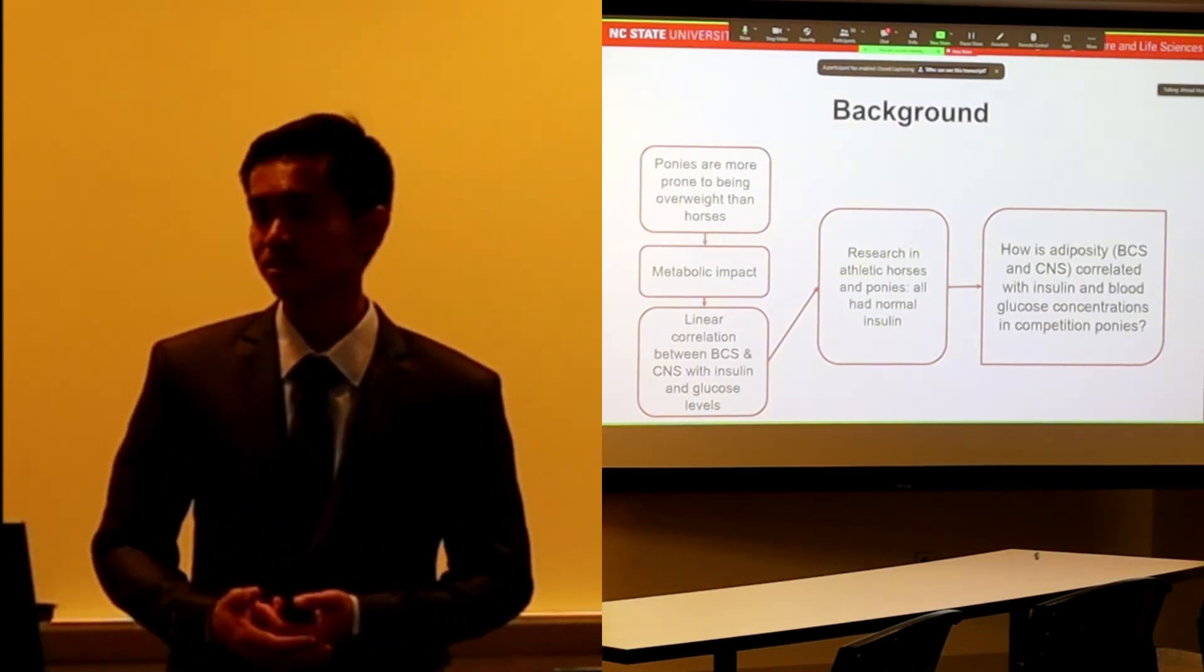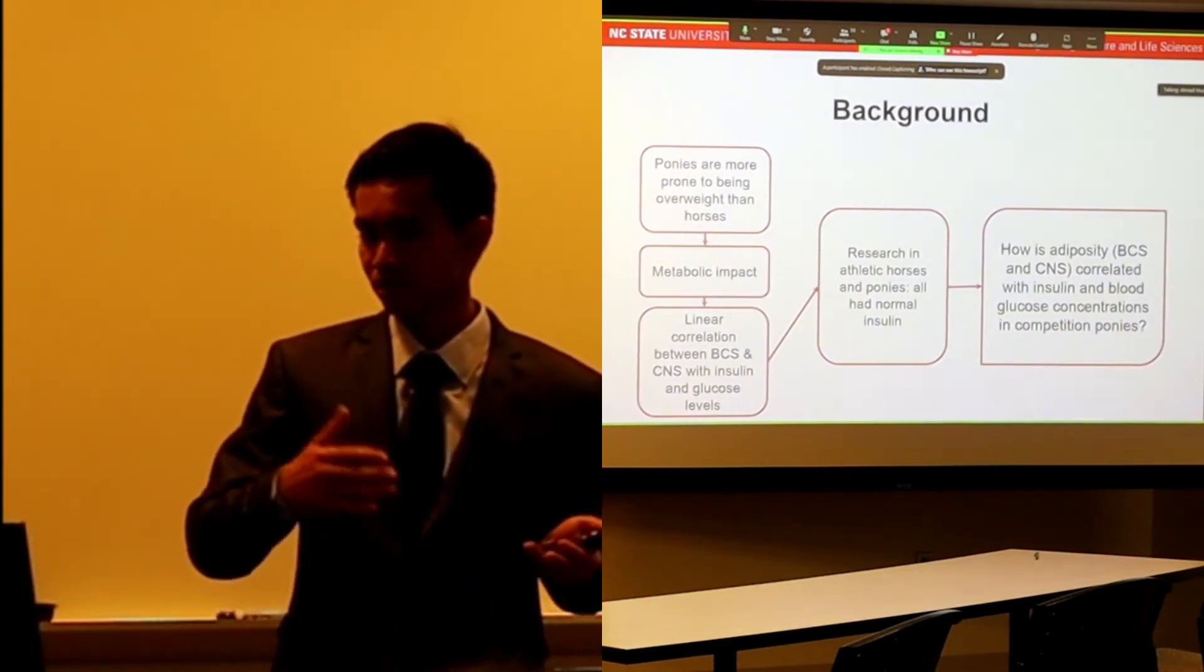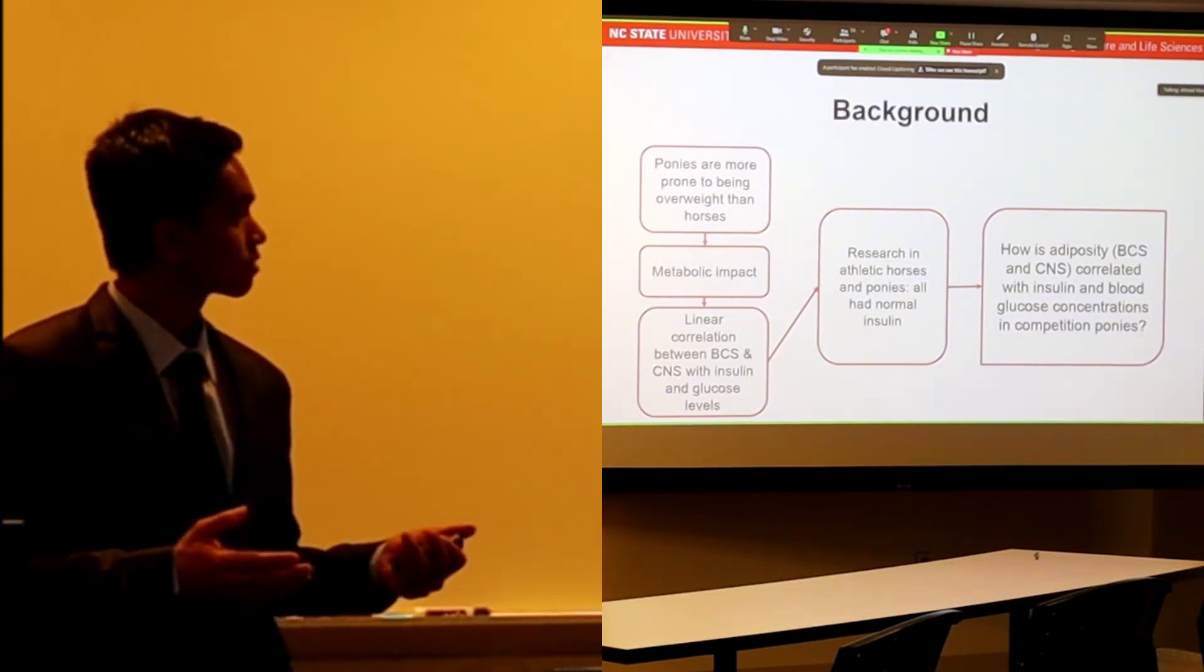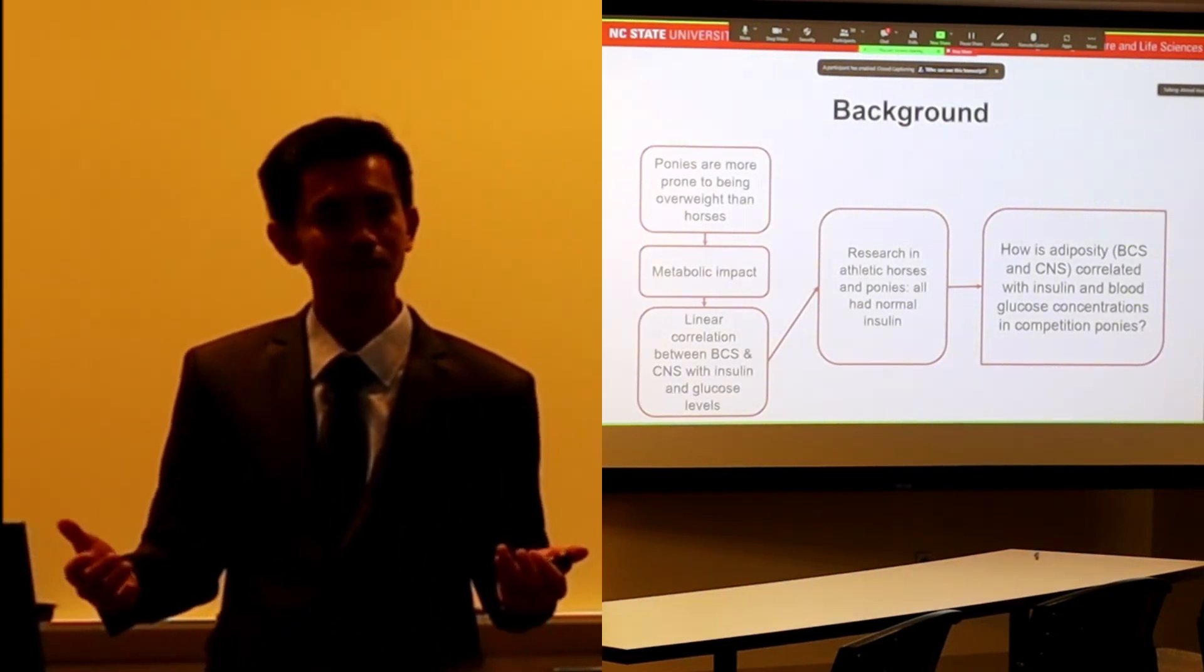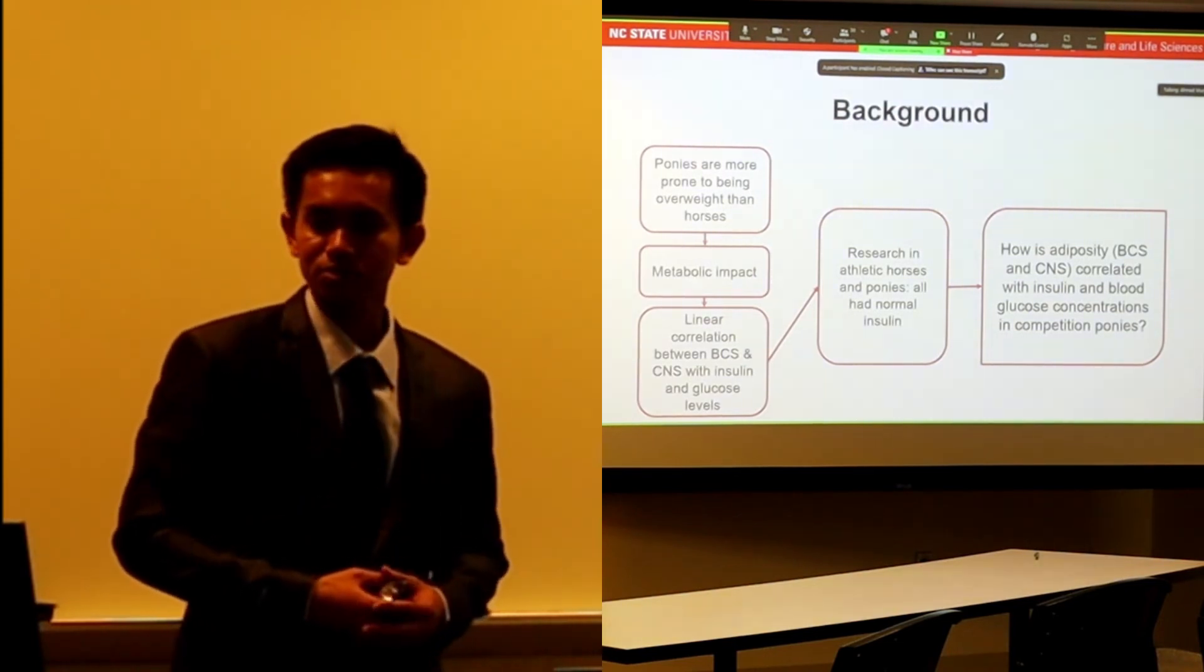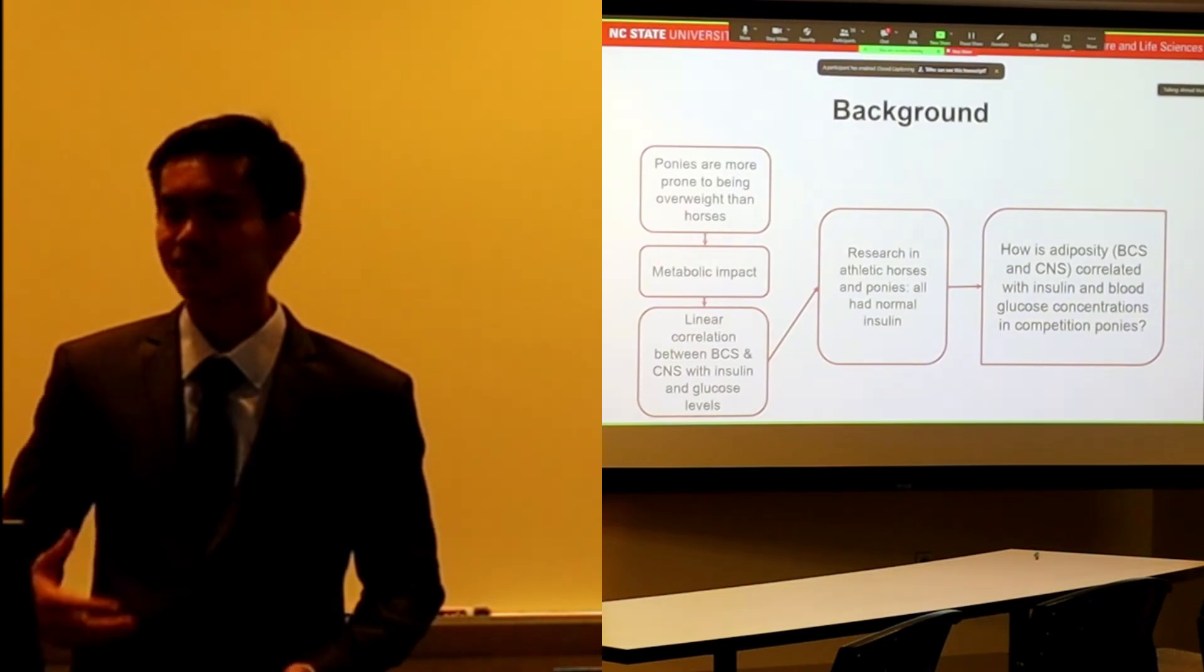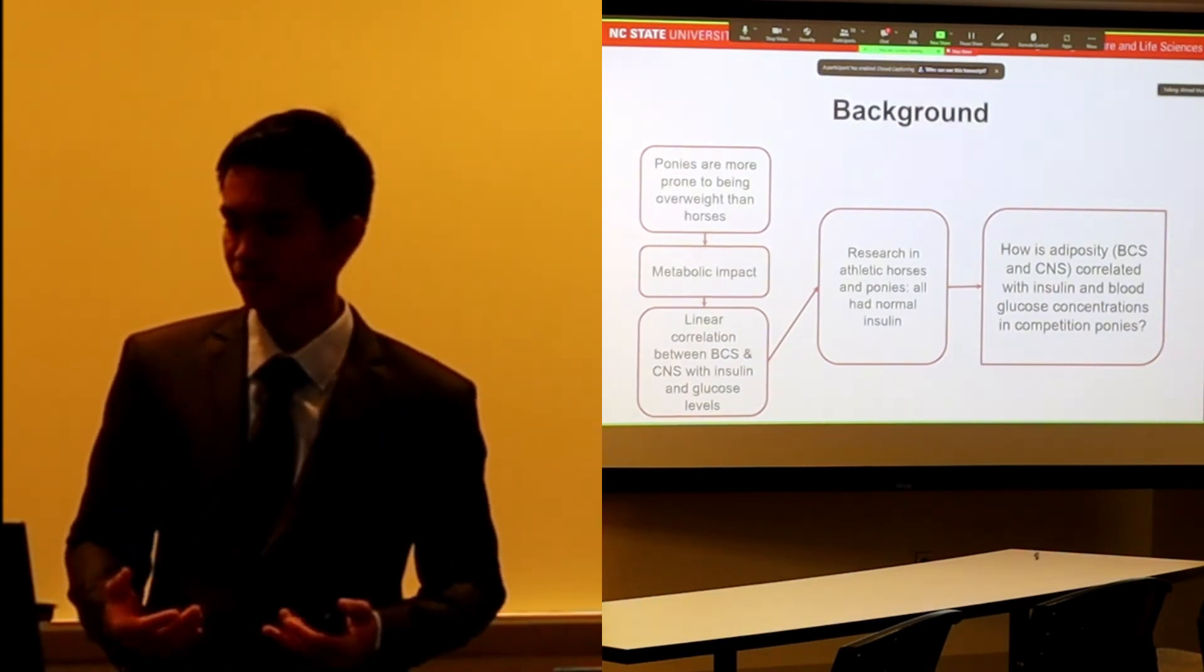They found that body condition scores of horses were more ideal than ponies. They also found the greater the body condition score, the greater the insulin. Surprisingly, all the individuals had normal insulin levels. This brings us to a question whether sports or exercise regimes can protect animals that are overweight from negative impacts of excessive adiposity.